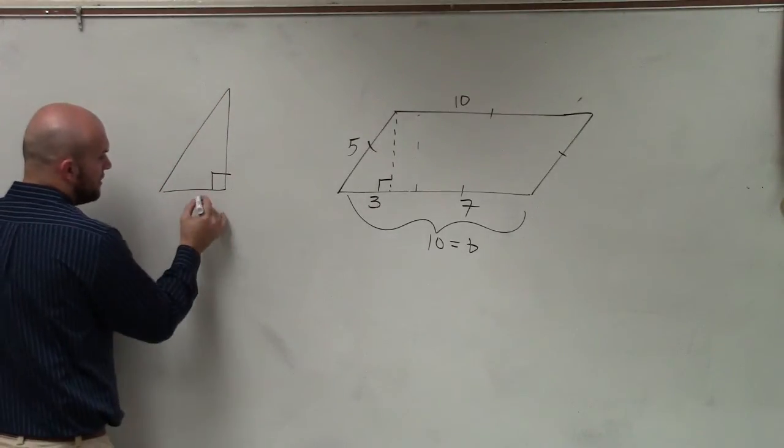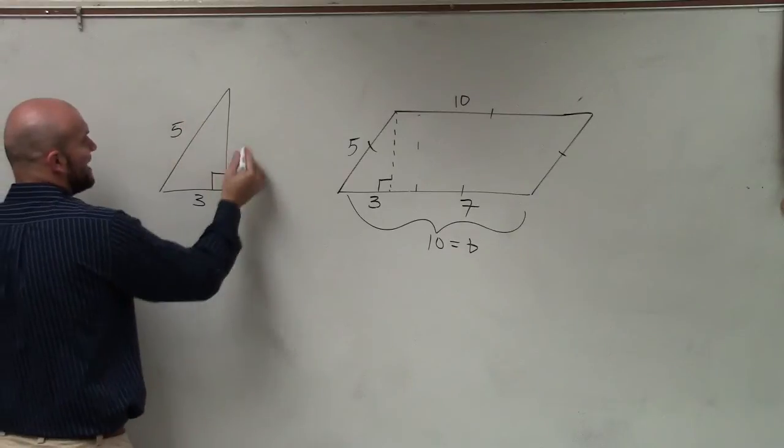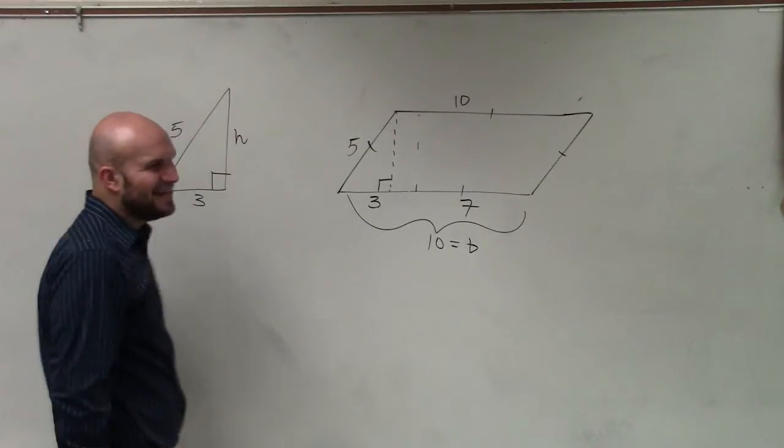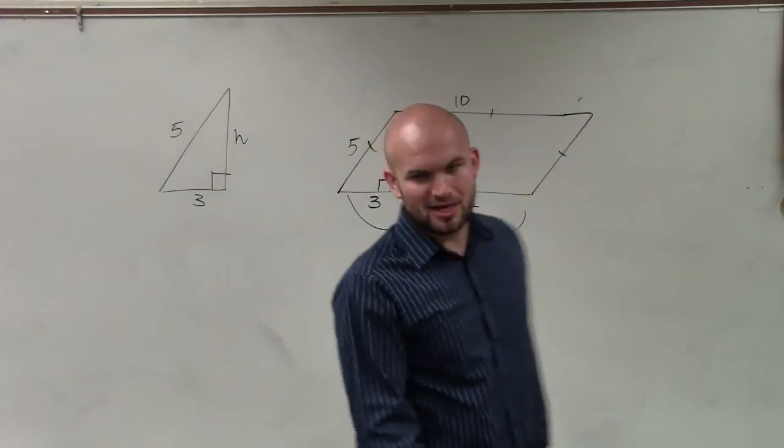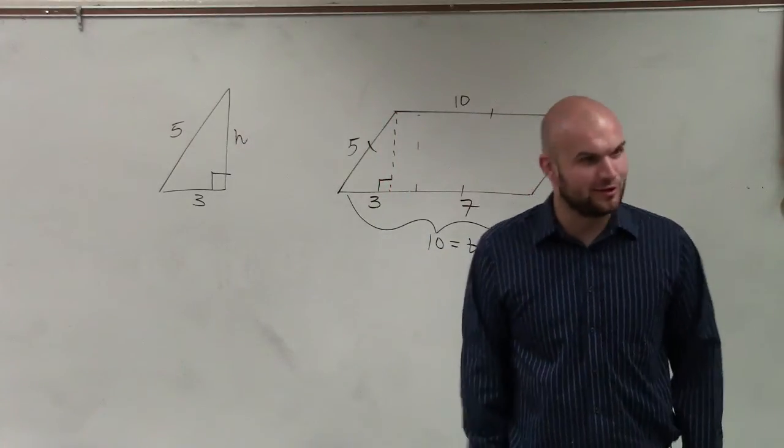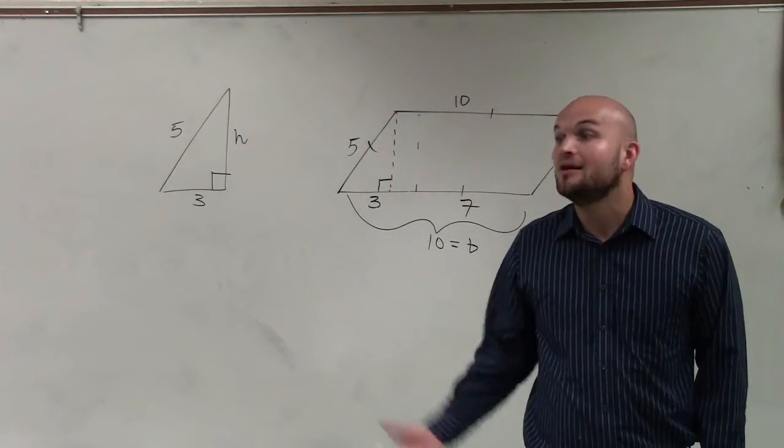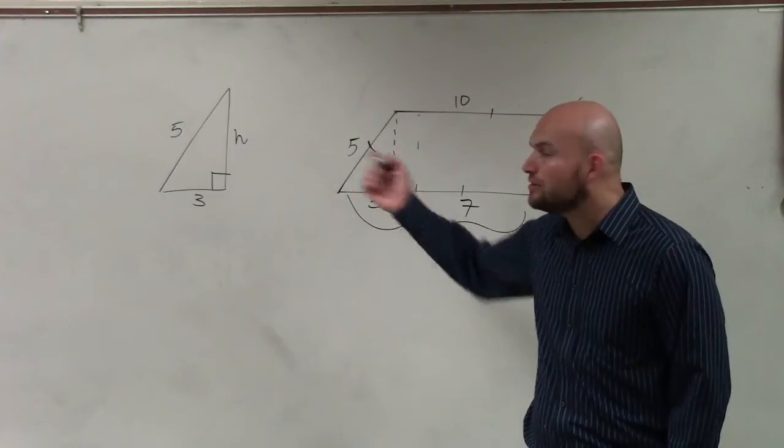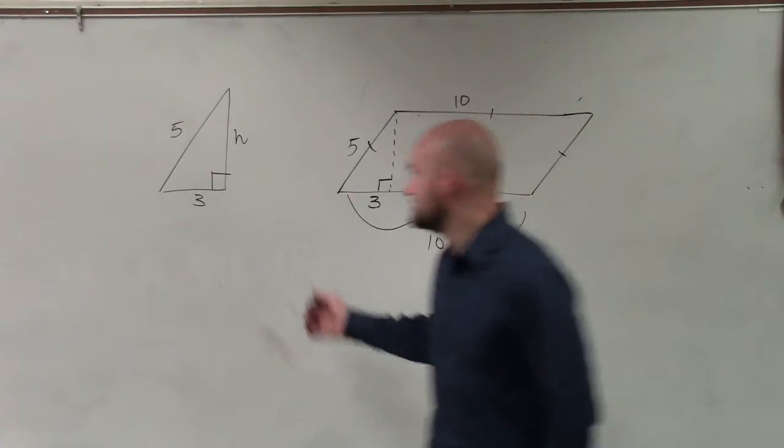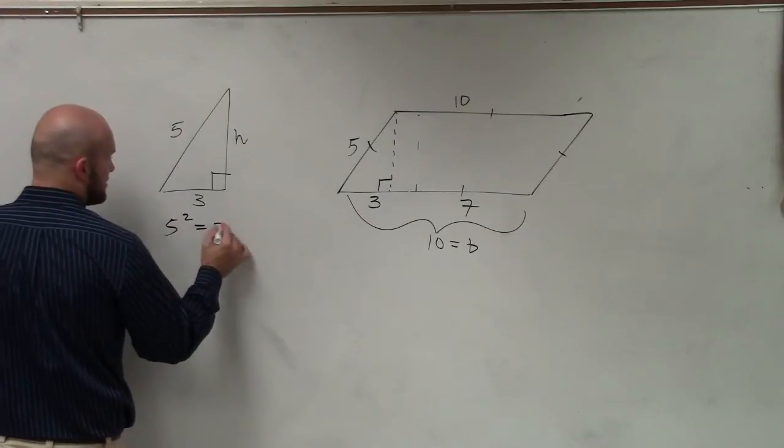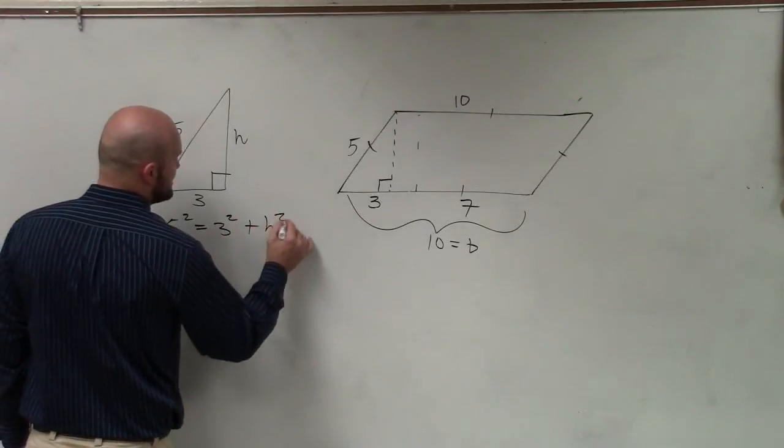It's a right triangle. That's three. That's five. And we know that this length is going to be the height. Is there anything that starts with the Pythagorean that we might be able to use for this? The Pythagorean theorem, right? So we can apply the Pythagorean theorem to solve for this. So I can say five squared equals three squared plus h squared.